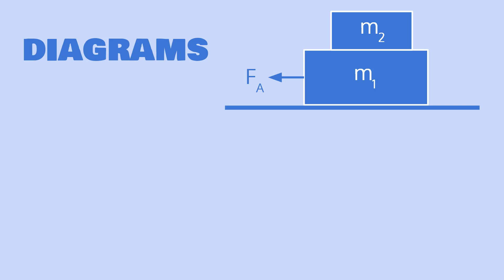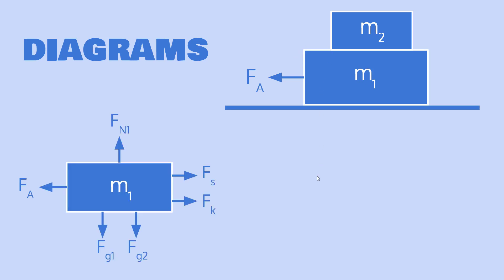We have two blocks stacked on each other — let's call the top one m1 and the bottom one m2. There's going to be some applied force pushing on the bottom block. Usually in this problem what we're looking for is the maximum applied force before the top block starts slipping off of the bottom block. Now let's make free body diagrams to figure out which forces are acting on each of the two blocks.